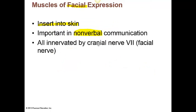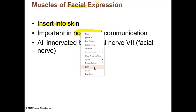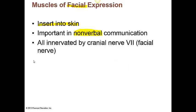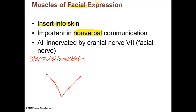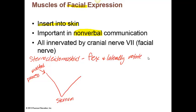Some important muscles to know are the anterior lateral neck muscles. The big one you need to know is sometimes abbreviated as the SCM — it stands for the sternocleidomastoid muscle. This is a great example of a muscle named for its points of attachment. It forms a V-shape going from the neck down to the sternum, attaching to the mastoid process, the sternum, and the clavicle. It is going to flex and laterally rotate the head.